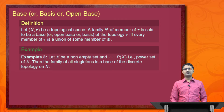For example, let X be a non-empty set and tau equal to simply the power set of X. Then the family of all singletons forms a base of the discrete topology on X. Next we introduce under which conditions a sub-family forms a base; Theorem 4 and Theorem 5 give the required answers.